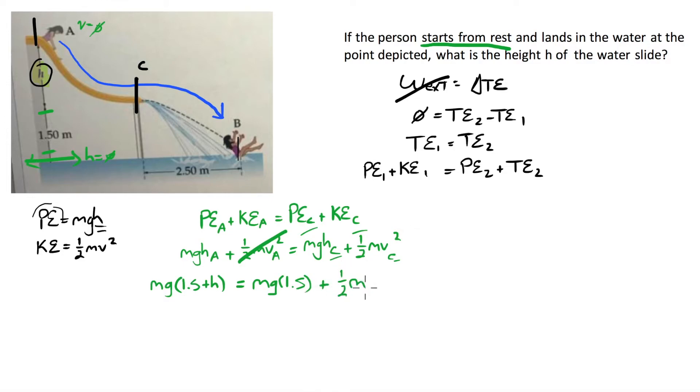And if you want, what we can do is we can say, we can fill in some information. G is always going to be 9.8. So the height at A, let's call it 1.5 plus my unknown height. Because this is going to have to be the reference level, so that's going to be height is equal to zero. So I'm going to call this height here at point A, 1.5 plus the h that I'm interested in.